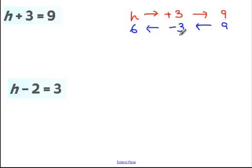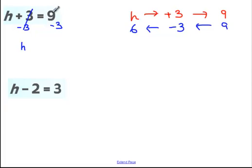Writing that algebraically: the opposite of adding 3 is subtracting 3, so if I subtract 3 from the left side I'm left with H on its own. Whatever I do to one side of an equation I must always do to the other, so I subtract 3 from the right hand side as well. That means 9 minus 3 is 6, so H is equal to 6.